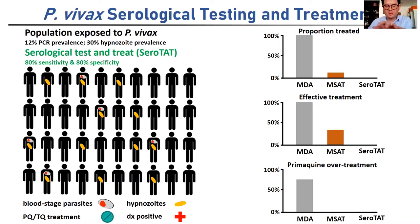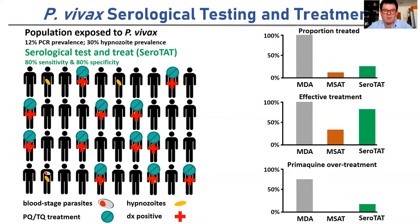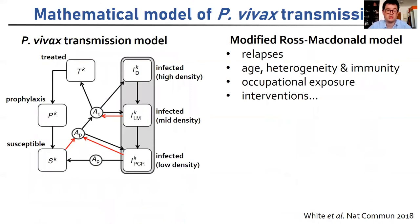Our approach is to find the sweet spot between these two strategies and use our serological methods to identify individuals with hypnozoites in the liver. By doing this, we can effectively treat most individuals who need to be treated while avoiding mass over-treatment of the population. We're running individually randomized clinical trials to test the effectiveness of this strategy, and in the interim we can apply mathematical transmission models to assess its potential effectiveness.